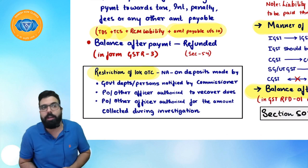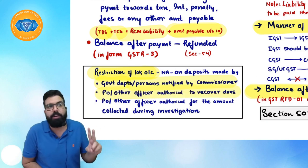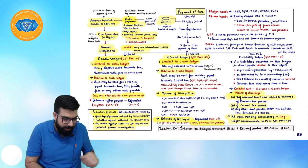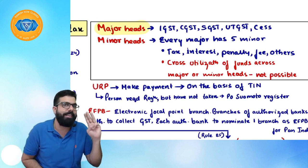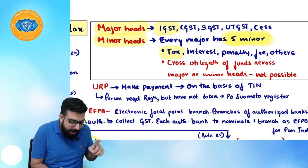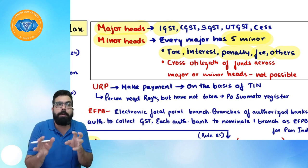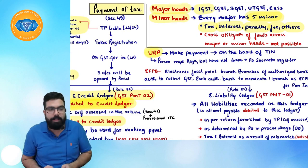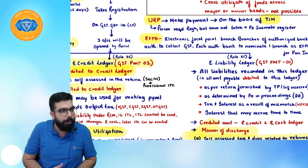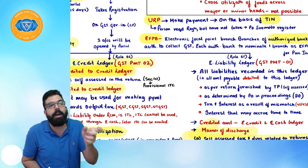The ₹10,000 over-the-counter restriction is not applicable when a government department or person notified by the Commissioner is making payment, or when a police officer or authorized officer is depositing amounts recovered during recovery of dues or collected during investigation. Major heads are IGST, CGST, SGST/UTGST. Every major head has five minor heads: tax, interest, penalty, fees, and any other amount. Cross-utilization across major or minor heads is not possible. An unregistered person pays on the basis of a temporary identification number. EFPB (Electronic Focal Point Branch) is a branch of an authorized bank designated to collect GST.